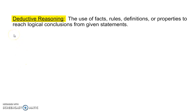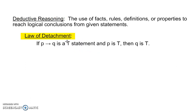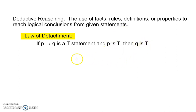Now let's look at deductive reasoning. Deductive reasoning uses facts, rules, definitions, or properties to reach logical conclusions from given statements. We've got two laws of logic. The law of detachment says: if p then q — if our hypothesis is true as a whole, and p is a true statement, then q also has to be true. So if we know that 'if p then q' is true, and someone tells us p is true, then we know q has to be true. That's the law of detachment.